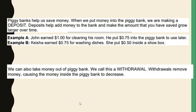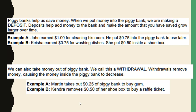We can also take money out of the piggy bank — we call this a withdrawal. Withdrawals remove money, causing the money inside the piggy bank to decrease or become less. Let's look at the examples. Martin takes out $0.25 out of the piggy bank to buy gum. And Kendra removes $0.50 from her shoe box to buy a raffle ticket. Because these friends are taking money out of their bank, they made a withdrawal.